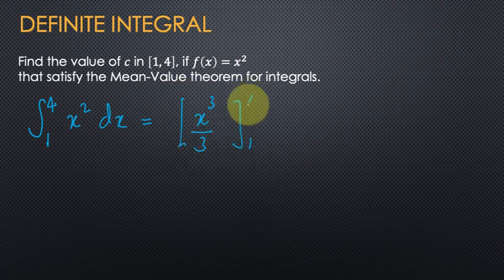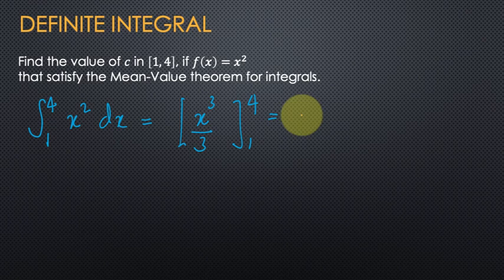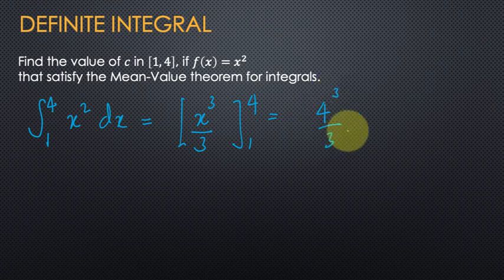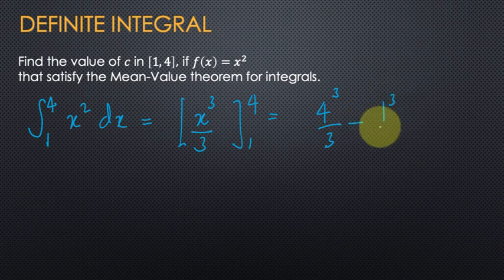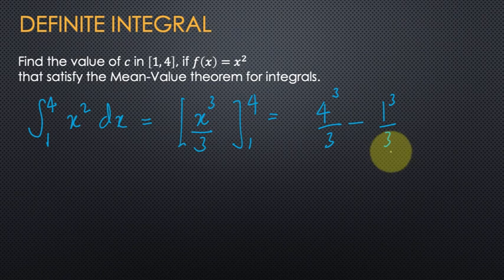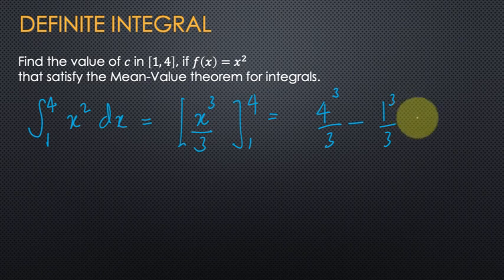Evaluating with limits 1 to 4, this equals (4 cubed over 3) minus (1 cubed over 3), which is equal to 21.